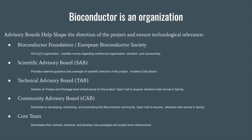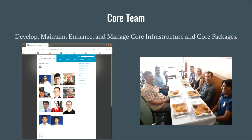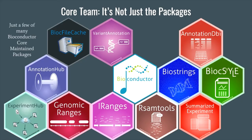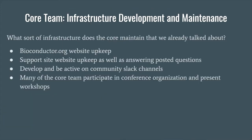Those are some great resources to connect to the community, but I want to revisit the organization slide because we skipped over the last entry: the core team. The core team plays a vital role in the functionality of the project — it's a small dedicated group of developers that help develop, maintain, and enhance core packages and project-level infrastructure. Most people think the core team only takes care of core packages and package maintenance, but there's a lot of infrastructure in place to make the project function.